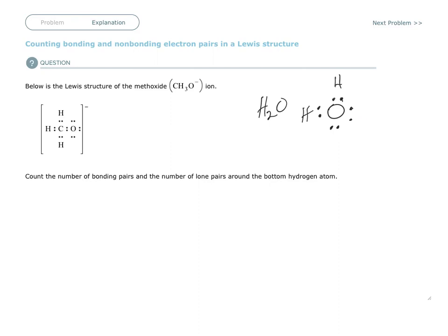And this one doesn't have anything attached to it, and this one doesn't have anything attached to it. This is called a lone pair. So this is a lone pair, and these are bonding electrons. The two electrons are being shared as a bond, and these two electrons that are not attached to anything is called a lone pair.